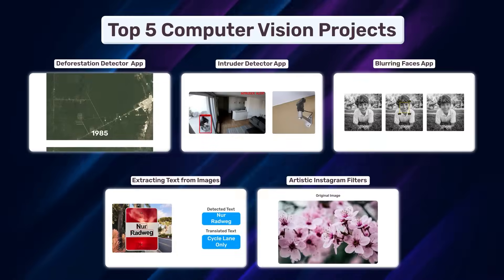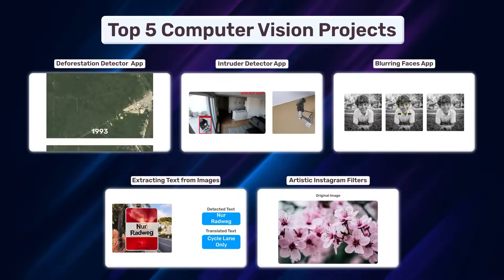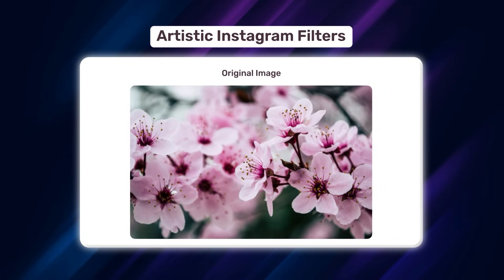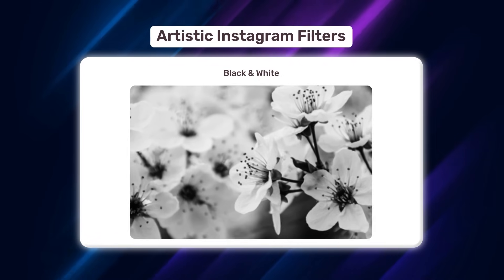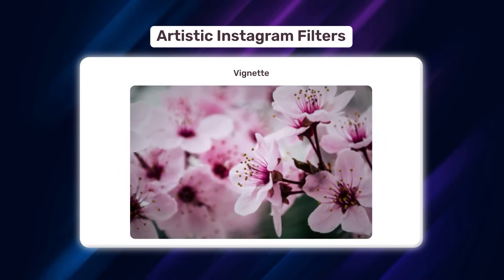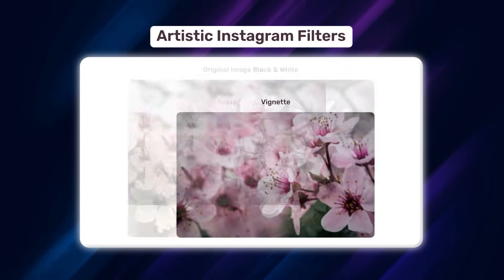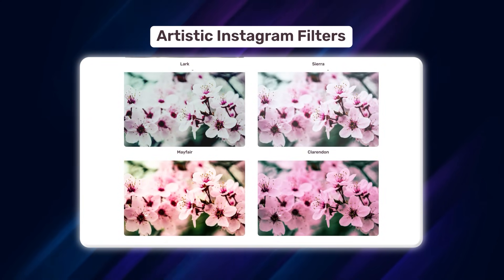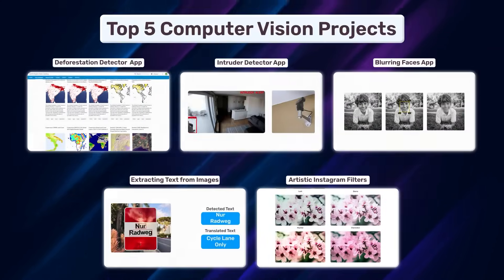Our fifth favorite project is Artistic Instagram Filters. You can convert a given image from color to black and white, to sepia, or give it a vignette effect. Really, the sky is the limit — if you can imagine it, you can code it using OpenCV.